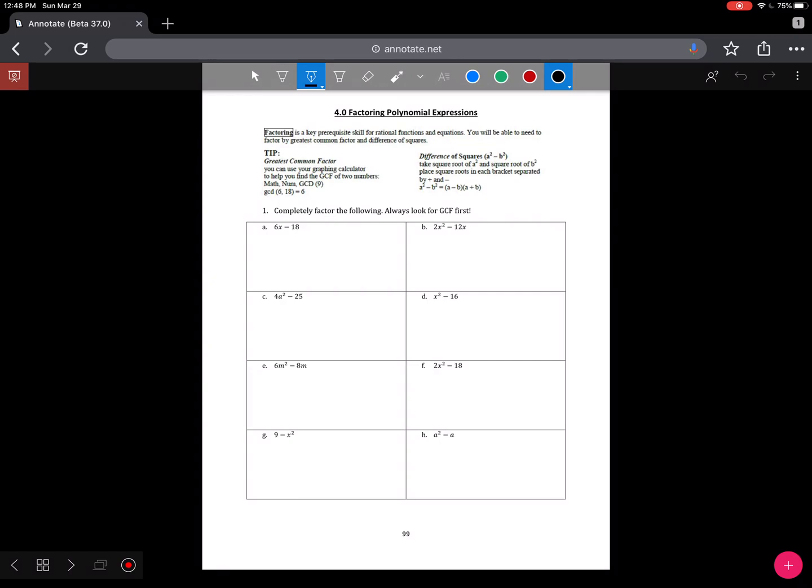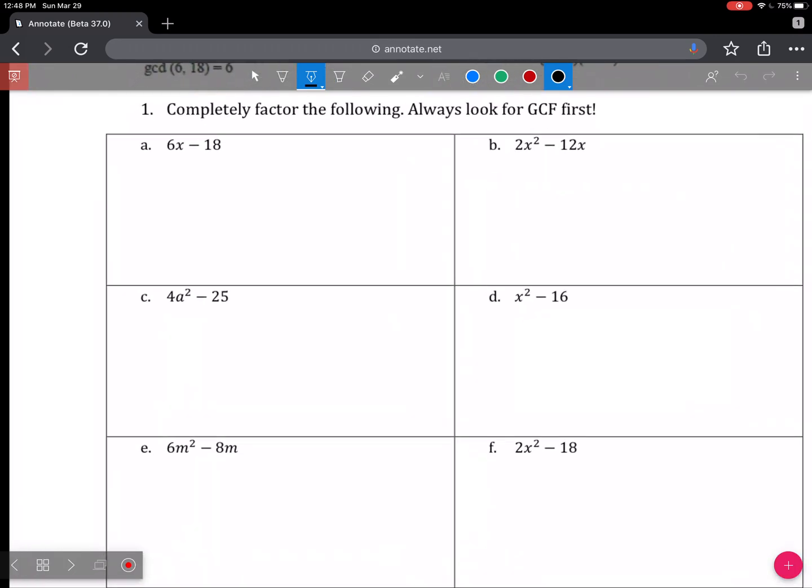Today we're going to be looking at factoring two types of polynomials: greatest common factor and difference of squares type factoring. We're on page 99.